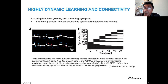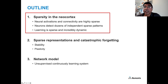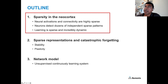This is quite different from deep learning systems today. To summarize the review of sparsity in the neocortex: neural activations and connectivity are highly sparse; neurons actually detect dozens of independent sparse patterns; and learning itself is sparse, localized to dendritic segments, and incredibly dynamic, where the structure of the system is constantly changing.